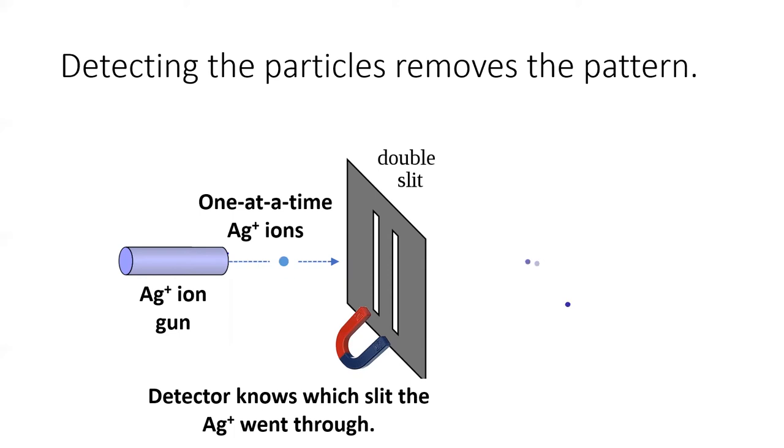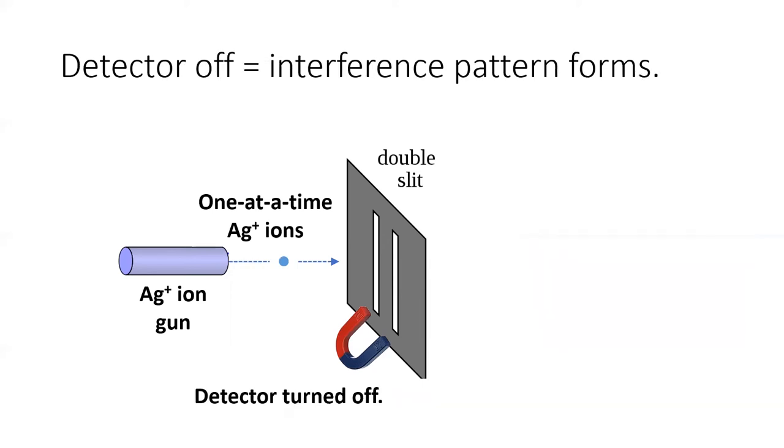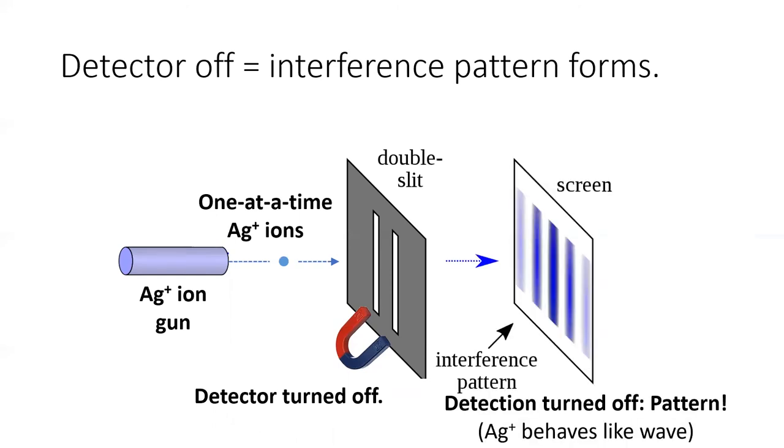With the detector on, when they let the silver ions through one at a time, they saw something completely different. The silver ions only make two spots, which are brightest behind each slit. This is exactly what you would expect if silver ions were behaving just like particles. But then, when they turned the detector off, the interference pattern reemerged.